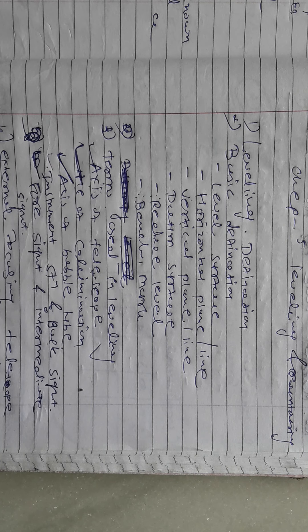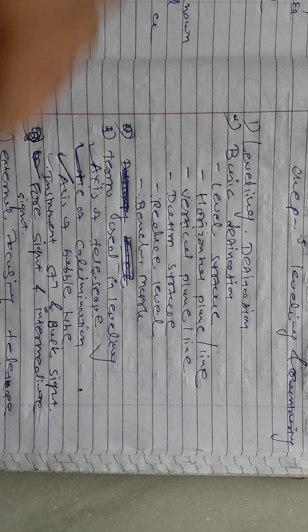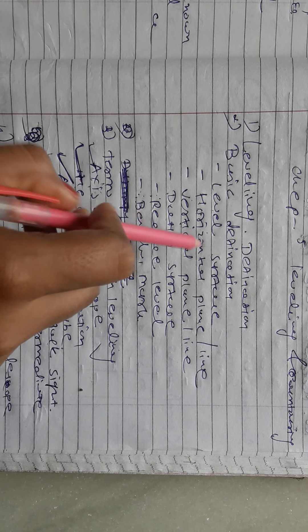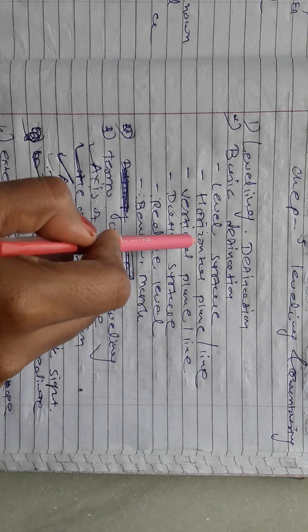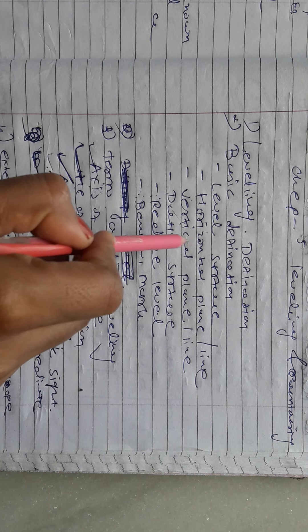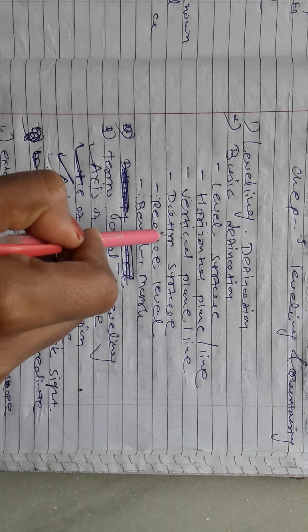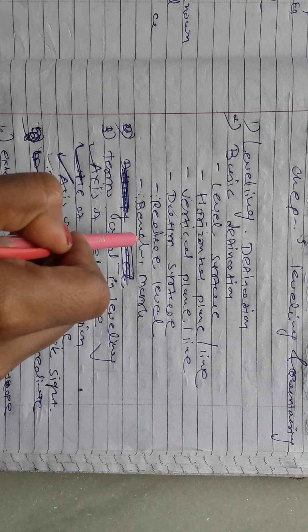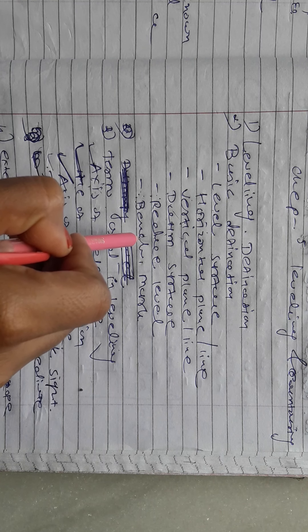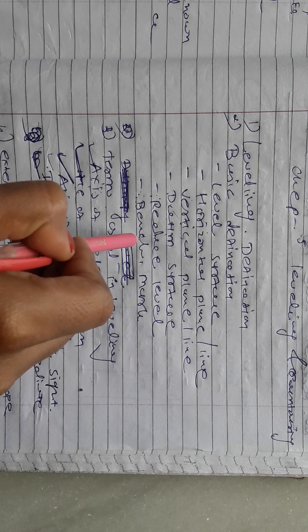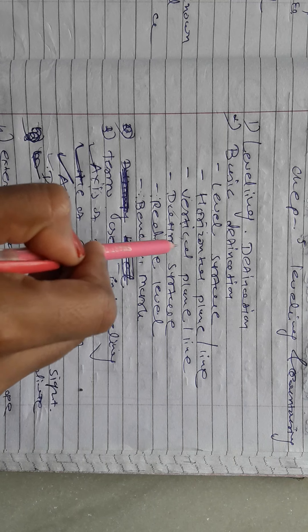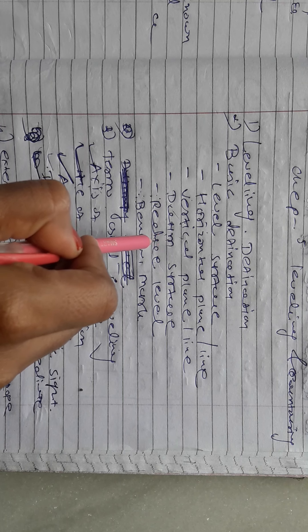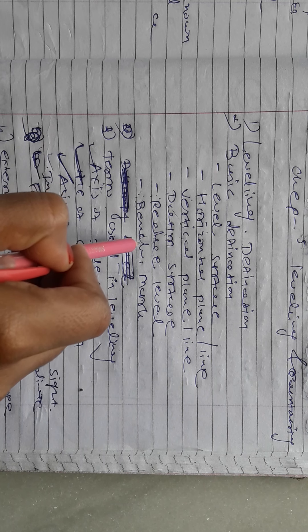First, Leveling — there is a Leveling definition. The basic definitions are: Leveled surface, Horizontal plane and Horizontal line, Vertical plane and Vertical line, Datum surface, Reduced level, and Benchmark. These are the most important definitions — Datum surface, Reduced level, and Benchmark.